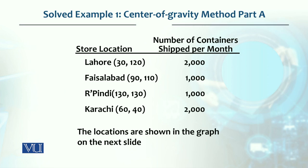The x-y coordinates are as follows: Lahore has an x-coordinate of 30 and y-coordinate of 120. Faisalabad is 90 and 110. Rawalpindi is 130 x-coordinate and 130 y-coordinate. Karachi is 60 x-coordinate and 40 y-coordinate. The load shipped is: Lahore 2,000 containers per month, Faisalabad 1,000, Rawalpindi 1,000, and Karachi 2,000 containers per month.